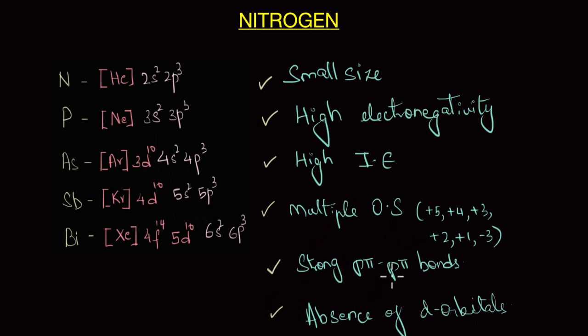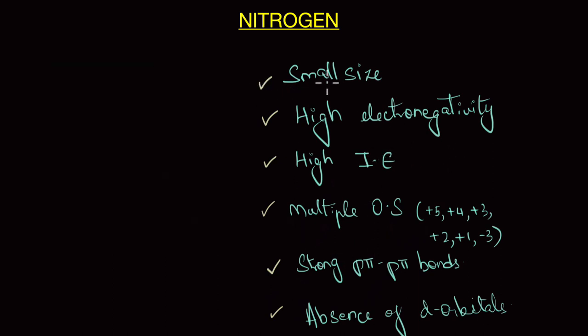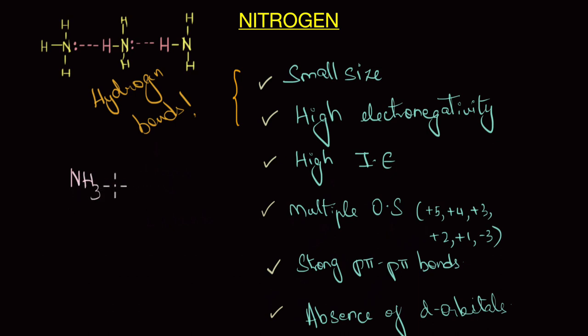But what are the consequences? How do these properties affect the chemistry of nitrogen? Let's see, because of its small size and high electronegativity, nitrogen has the unique ability to form hydrogen bonds. This is why ammonia forms hydrogen bonds whereas the larger less electronegative phosphorus has no such possibility. That is, phosphine does not form any hydrogen bonds but ammonia forms.